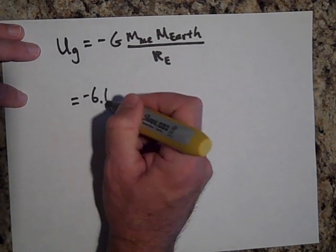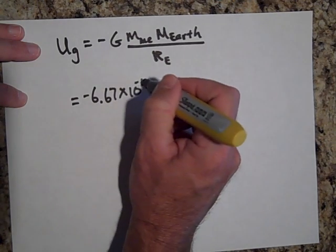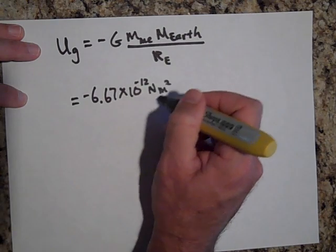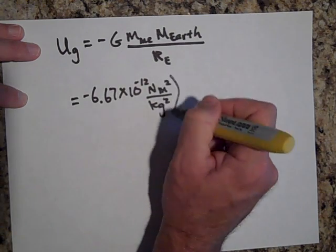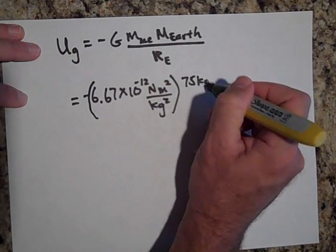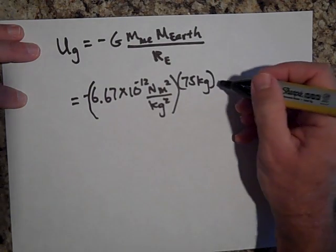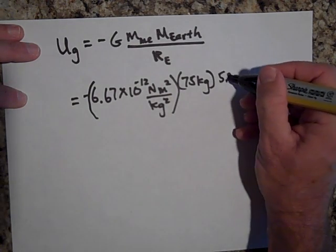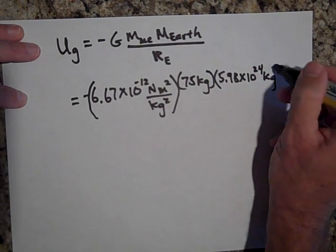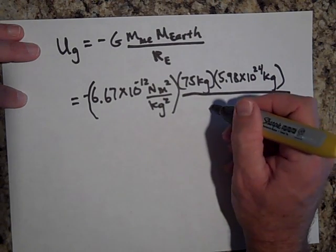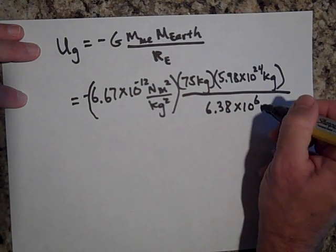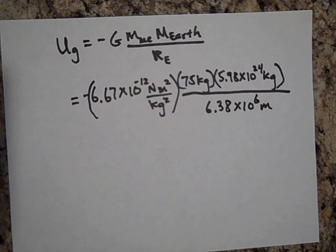So I put in negative 6.67 times 10 to the negative 11, Newtons meters squared per kilograms squared. That's G. Times the mass of me. I'm about 75 kilograms. The mass of the Earth, that's about 5.98 times 10 to the 24th kilograms. And then the radius of the Earth would be 6.38 times 10 to the 6 meters.